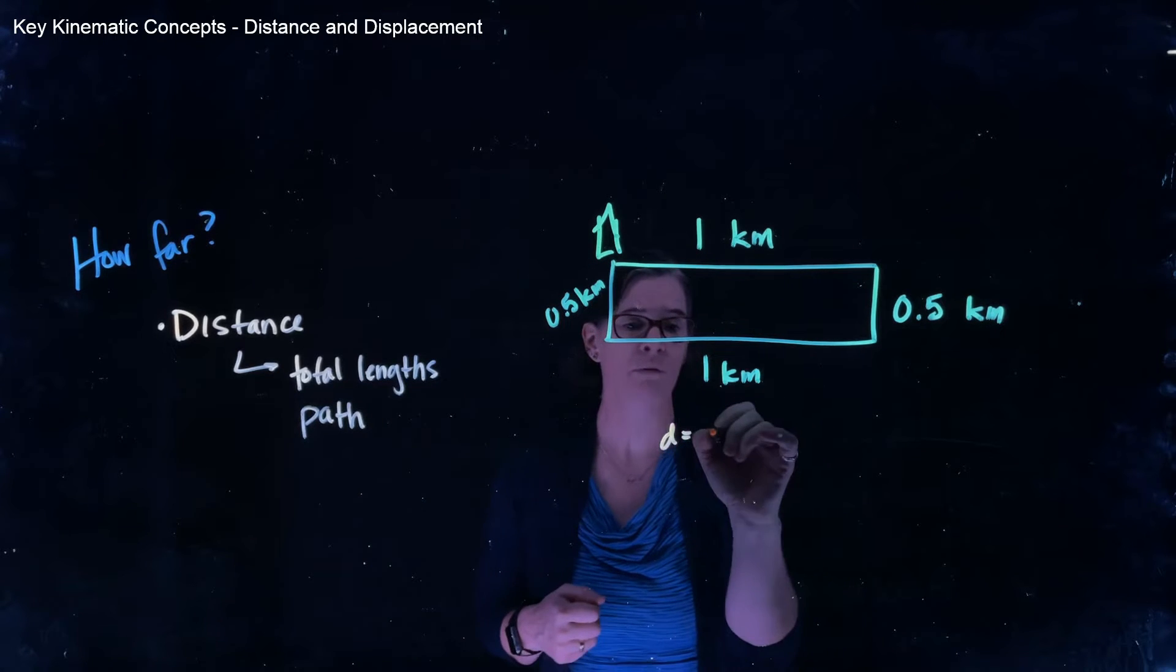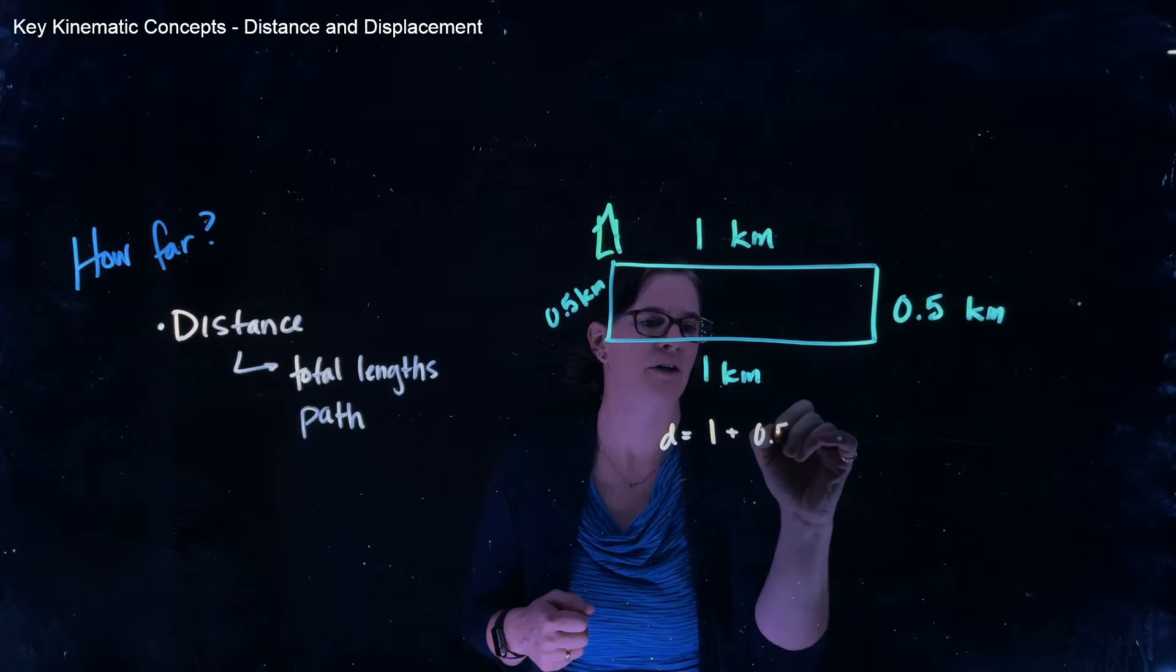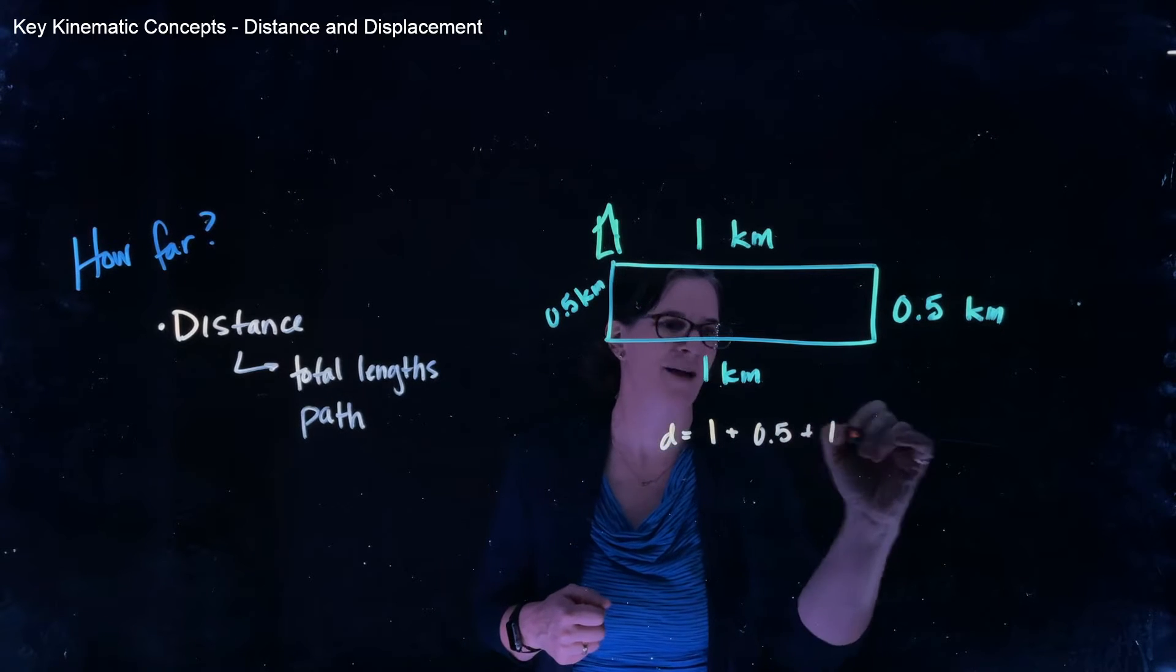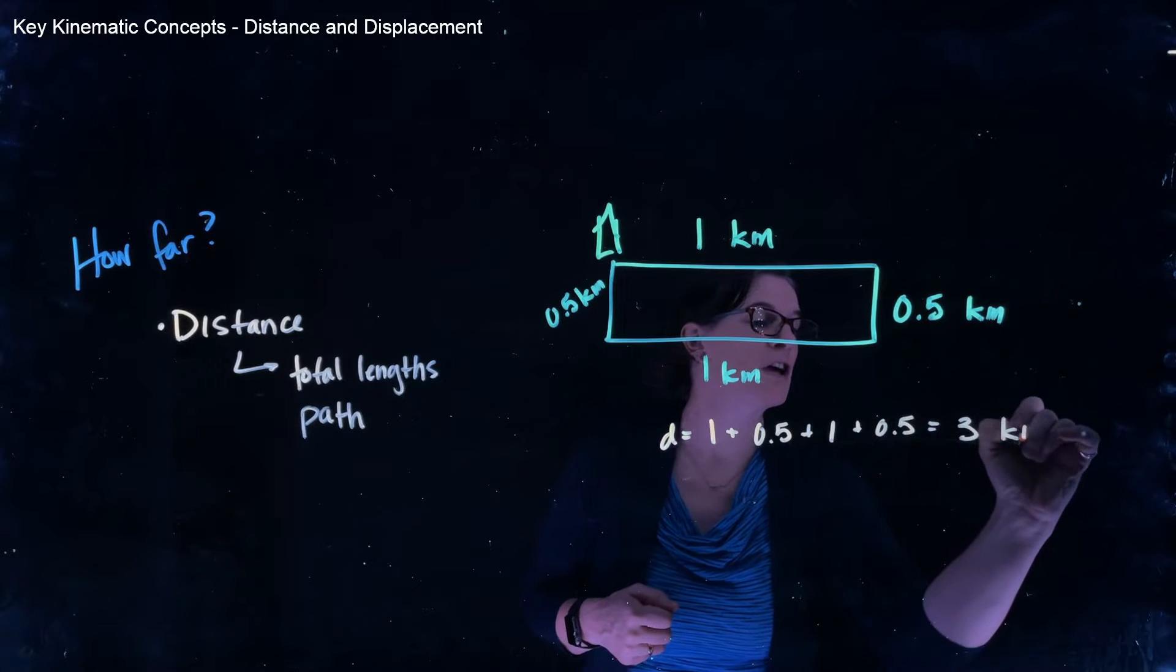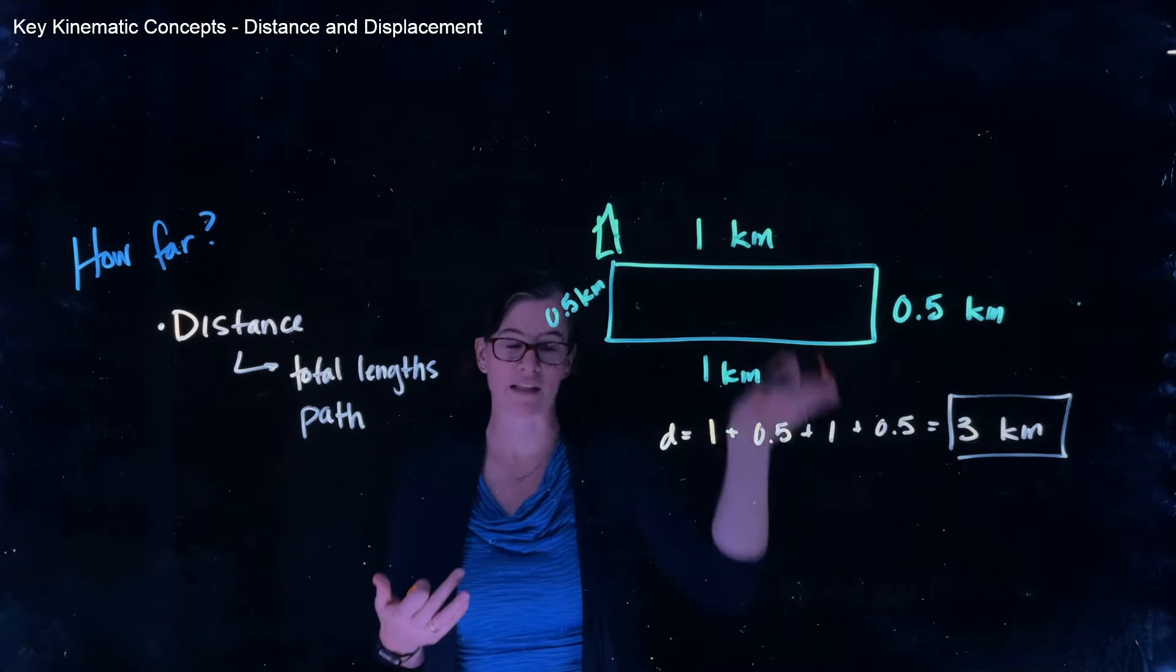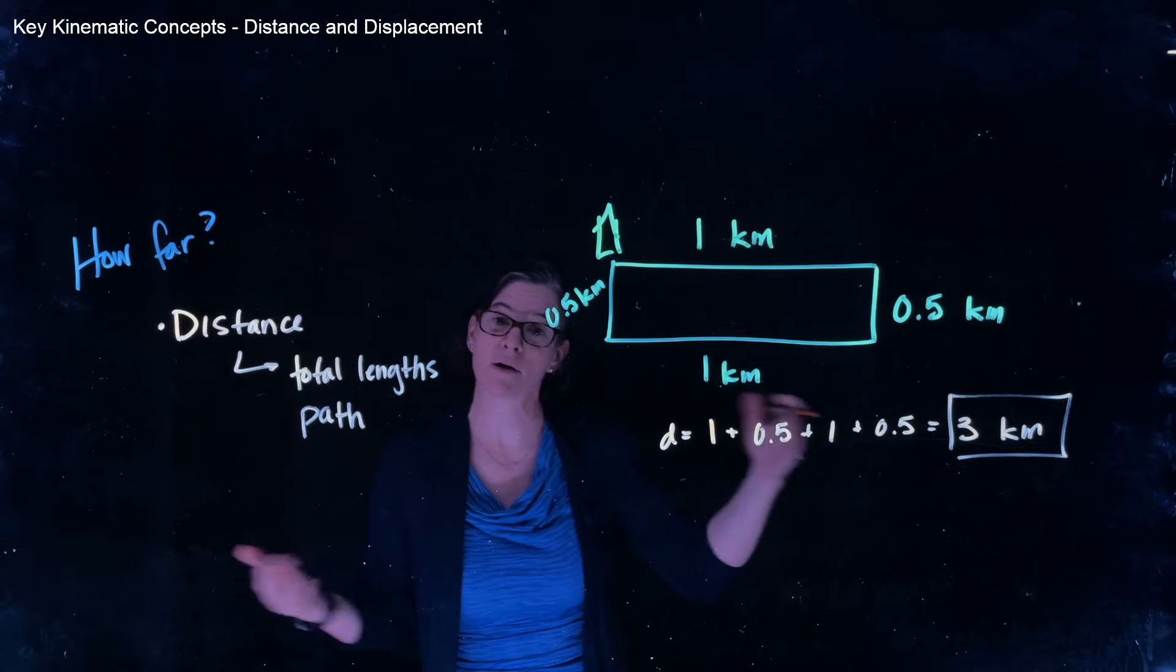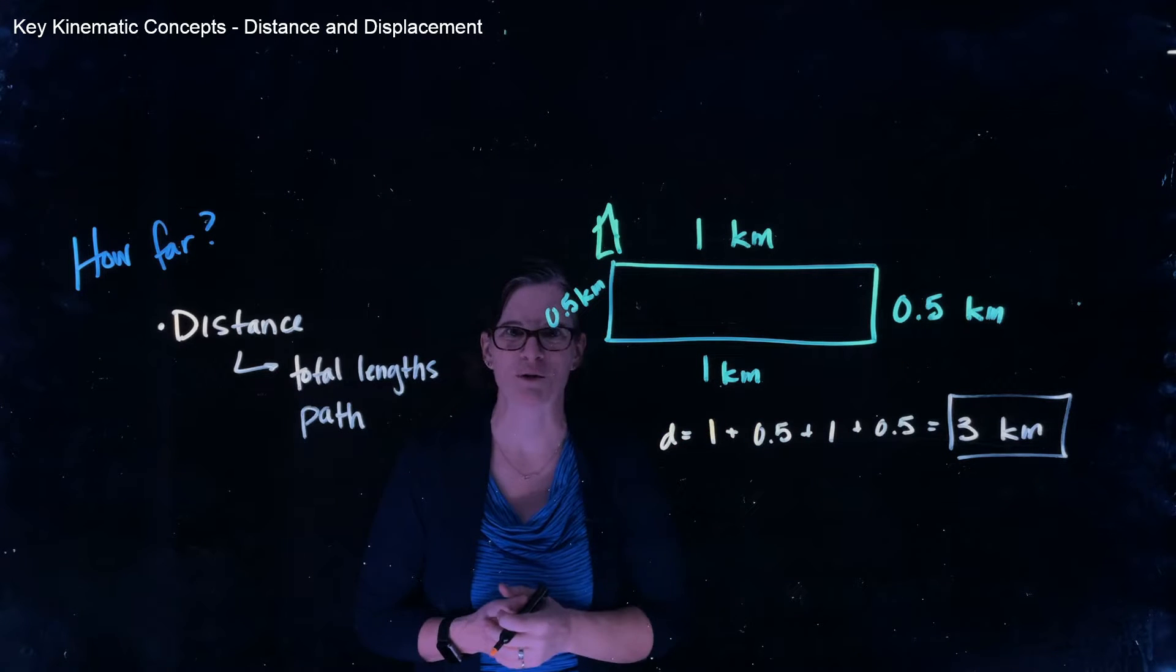So when I want to think about her total distance that she traveled around that farmyard, we know she went one kilometer, plus another half a kilometer, plus another kilometer, plus another half a kilometer. And so she traveled three kilometers in total distance. The total lengths. I paid attention to the length. I paid attention to the amount of length she traveled, and I paid attention to its path.